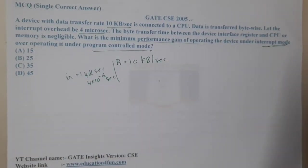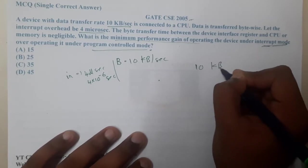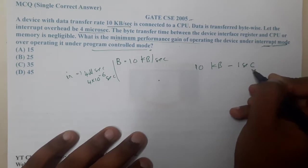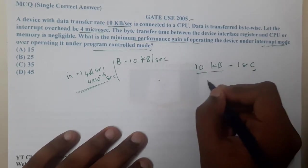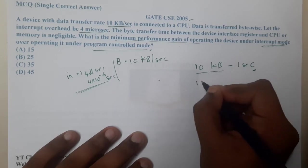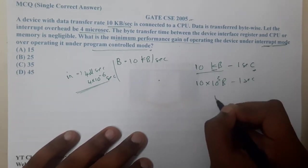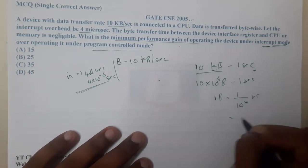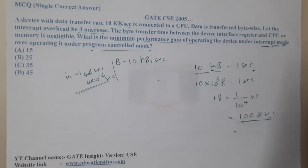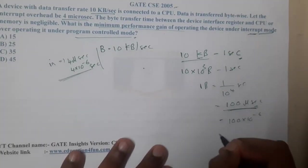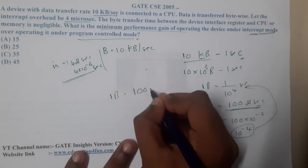Given 10 KB/s, that means 10 × 10³ bytes per one second. So how long does it take to transfer one byte? It is 1 divided by 10⁴ seconds, which equals 100 microseconds — that is 100 × 10⁻⁶, or 10⁻⁴ seconds. So 1 byte is transferred in 100 microseconds.